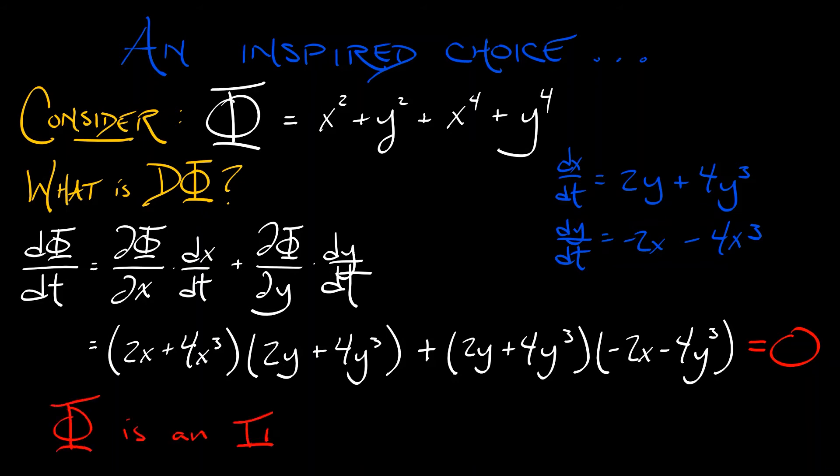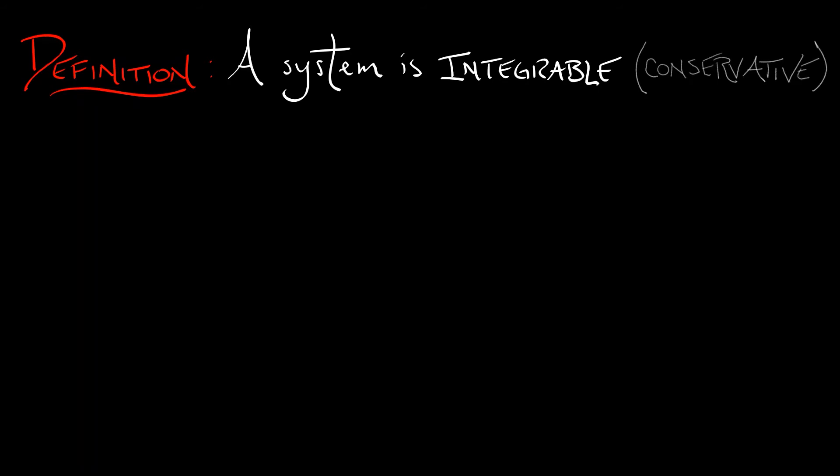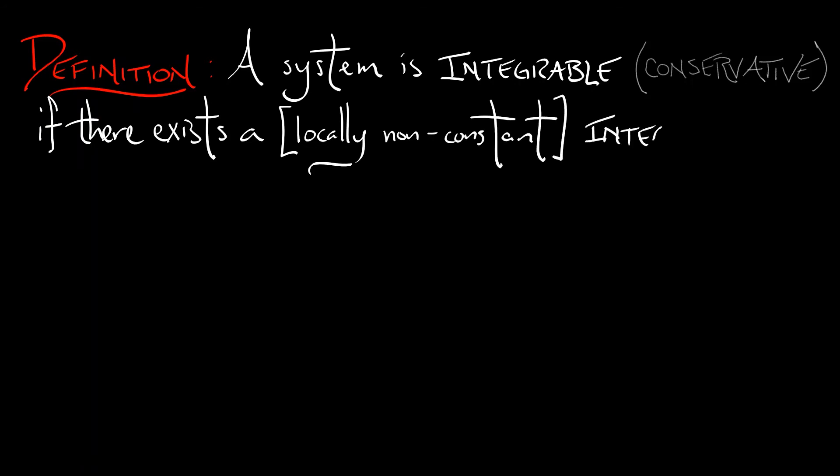Such a φ is called an integral, and this function is constant along orbits of this dynamical system. This leads us to a more general definition. We say that a system is integrable, some people like the word conservative, if there exists an integral, a function that is locally non-constant.